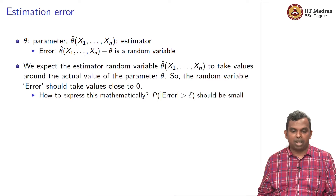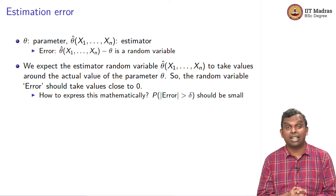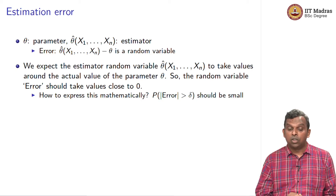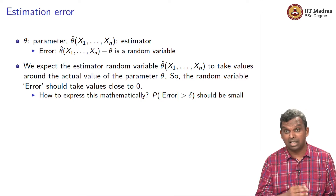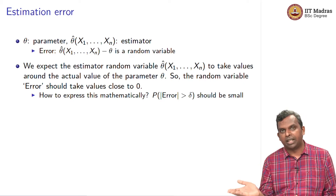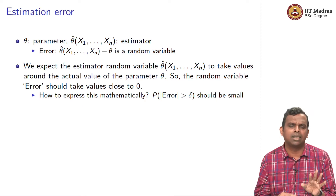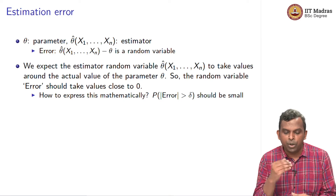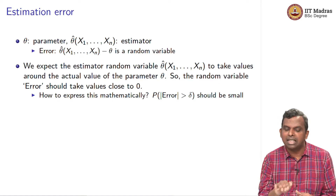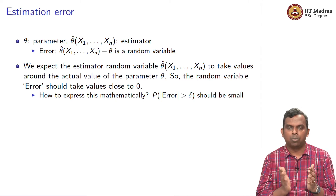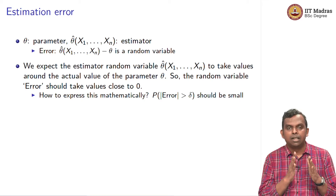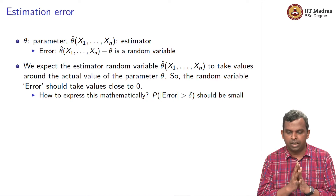A good estimator will not take many high values. We are expecting that a good estimator will take values close to the actual theta, in which case the error should be very, very close to 0. One way of precisely writing this mathematically is: error is not just a number, it is a random variable. So you can think of probability that the absolute value of the error is greater than delta should be very small. The probability that the absolute value of the error is too big should be small, but how do you pick delta? In an actual problem, what is a meaningful choice for delta?